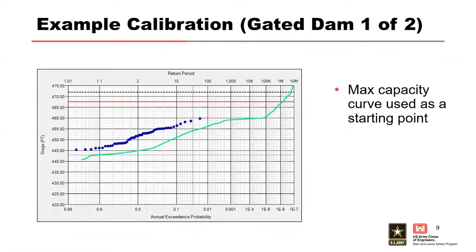Given this model, what's our estimate of the annual exceedance probability at the top of flood pool elevation, which for this dam is 462.5 feet? It's on the order of 4e-6 AEP, which is about 1 in 250,000. However, this estimate is likely to be incorrect and unconservative, given the poor calibration of our model to the observed data.